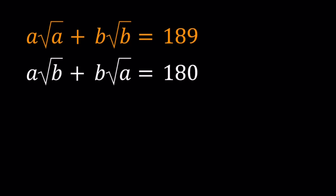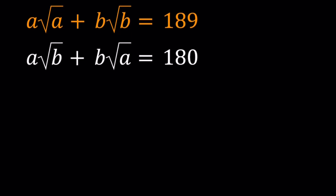Hello everyone. In this video, we're going to be solving a radical system. We have a times the square root of a plus b times the square root of b equals 189, and a times the square root of b plus b times the square root of a equals 180. We're going to be looking for a and b values. I'll be presenting two methods, and let's start with the first one.